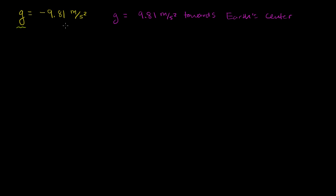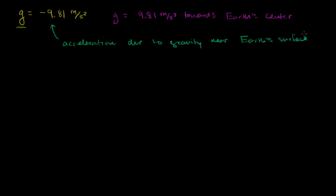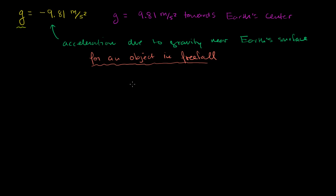Probably the most typical way to interpret this value is as the acceleration due to gravity near Earth's surface for an object in free fall. The reason why I'm stressing this last part is because we know of many objects that are near the surface of the Earth that are not in free fall. For example, I am near the surface of the Earth right now and I am not in free fall.